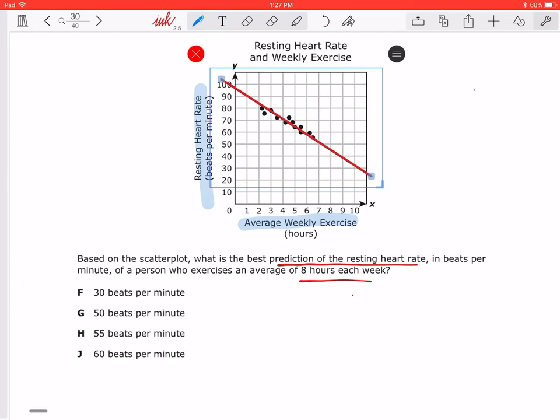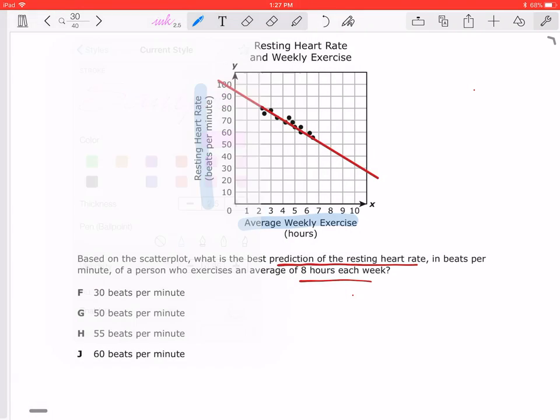Now remember, in order for me to talk about making the line a best fit, it needs to be closest to where it goes in all of them, kind of in the middle so that they're closest. That's going to be the best one. All right, now, and it says 8 beats per minute. So now I'm going to draw my line, 8, 8 hours exercise average.